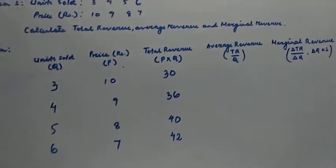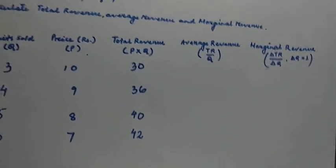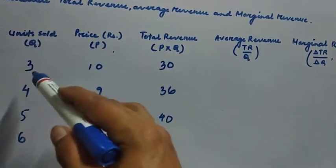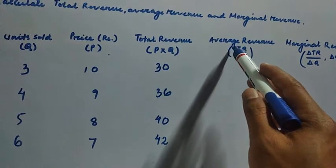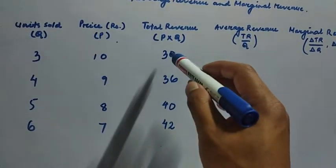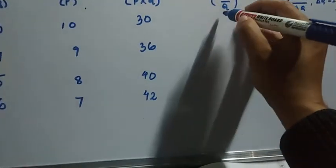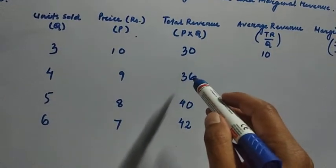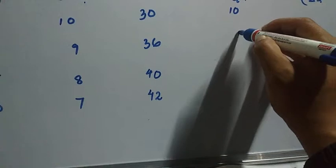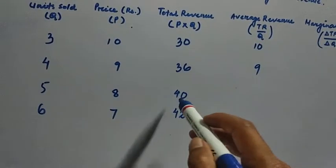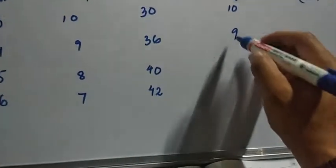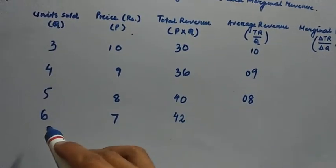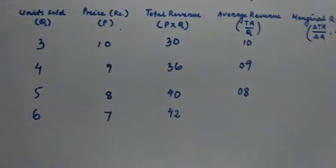Now how do we find average revenue? We divide total revenue by units sold. So 30 divided by 3 is 10, 36 divided by 4 is 9, 40 divided by 5 is 8, and 42 divided by 6 is 7.